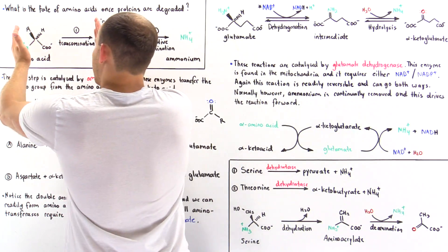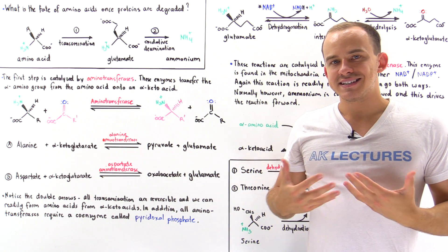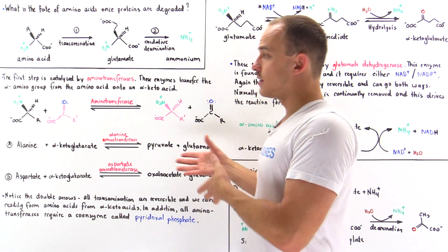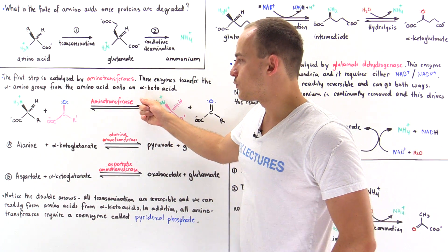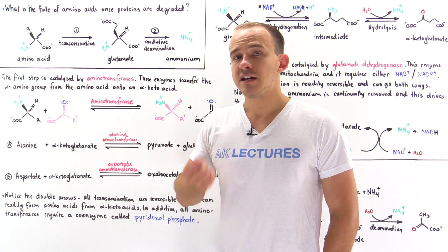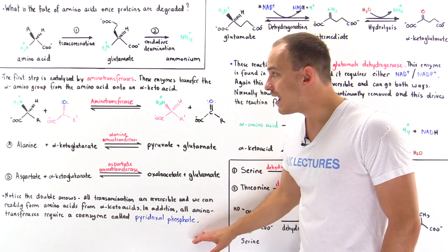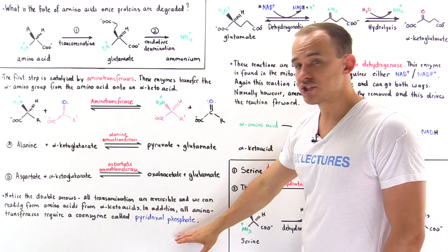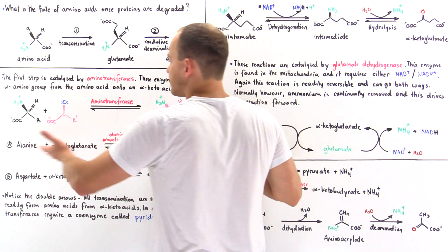Let's begin by focusing on transamination. Transamination is catalyzed by an enzyme known as aminotransferase, also called transaminase — but in this lecture we'll refer to it simply as aminotransferase. Aminotransferase uses an important coenzyme: a vitamin B6 derivative known as pyridoxal phosphate. Pyridoxal phosphate needs to be present for this enzyme to actually be effective. If we have a deficiency in this coenzyme, this enzyme will not function correctly.